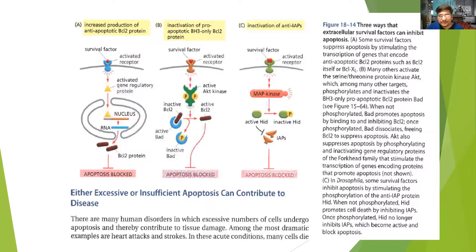At another level of control: when a survival factor binds to its receptor and transduction occurs inside the cell, it causes a lot of BCL-2 protein to be made, which blocks apoptosis. On the other hand, survival factor can also activate AKT kinase, which inactivates the BH3-only BCL-2 proteins such as BAD. With BAD inactivated, the anti-apoptotic BCL-2 proteins become active and apoptosis is blocked.